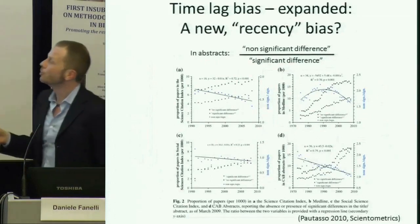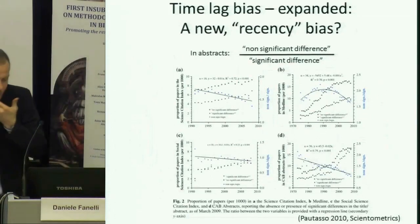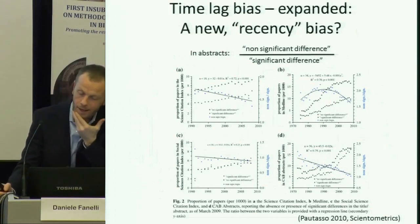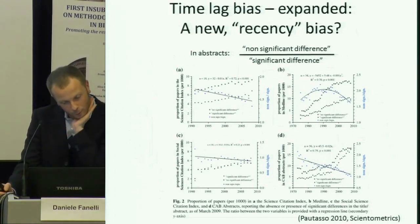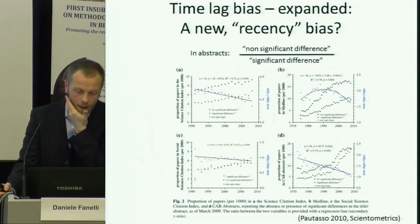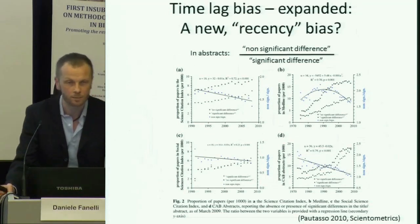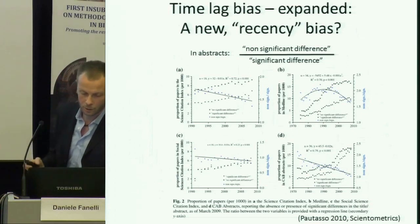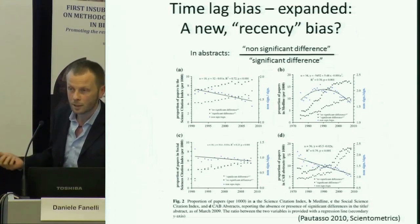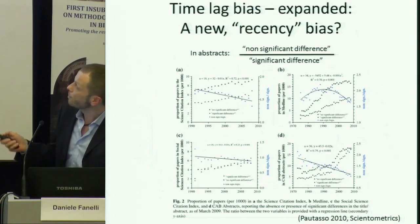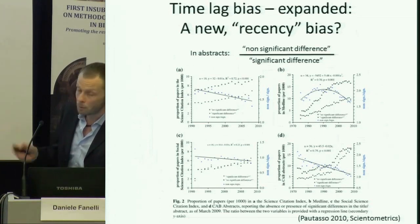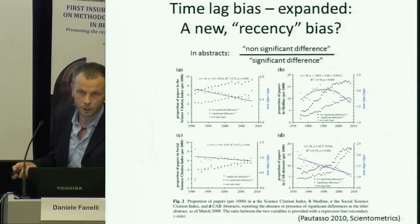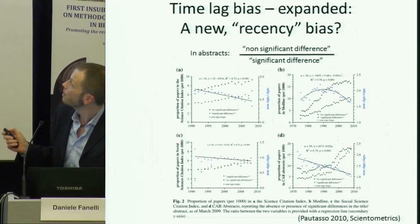The other aspect linked to time is even more intriguing because it's something quite new as an observation. I'm going to suggest you could call it a recency bias — though I'm not going to say it's definitely there yet. This is the fact that overall the proportion of positive results in the literature seems to be generally increasing.